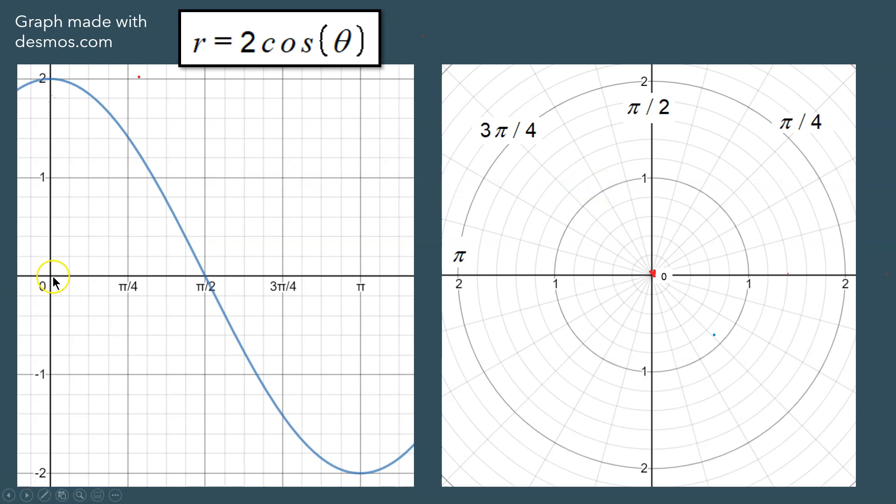So on the left side, when the angle is 0, notice that a 2 is produced, which means on the right side you're going to begin at the origin and go over to 2. That's going to give you the point (2, 0) in that position. Remember that means 2 units to the right at 0 degrees or radians.